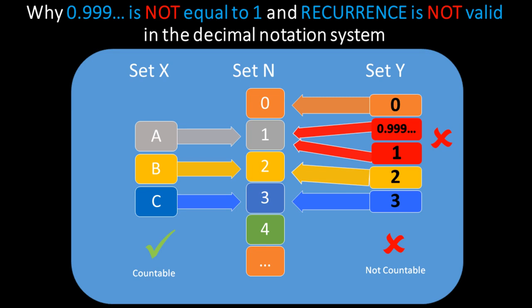However, Y has mapped 0.999 recurring and 1 to the natural number 1. And this violates the requirement for an injective function to map the members of Y to the set of natural numbers N. Therefore, Y is not a countable set.